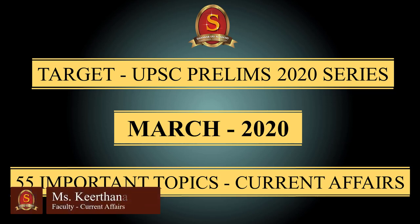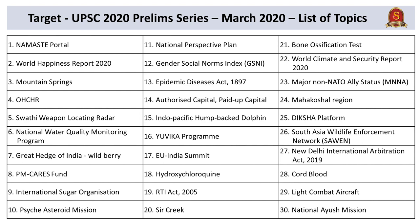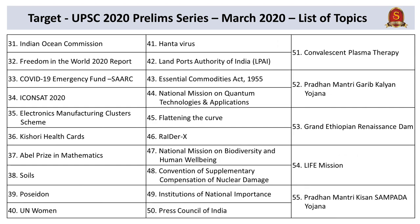A very good evening, aspirants. Welcome to the ninth part of Target 2020 series by Shankar IAS Academy. In the previous parts, we have seen more than 400 topics of current affairs in the prelims perspective for the months of July 2019 to February 2020. In this video, we will discuss 55 important topics belonging to the current affairs of March 2020 from a prelims perspective. These topics have been sourced from Hindu newspaper, Business Standard, Live Mint, and government sources like Public Information Bureau. The content has been sourced from reliable government sources like ministry websites, e-gazette, and PIB reports. The MCQs and their contents are provided as a PDF — download the PDF from the link in the session's description box and comment section.